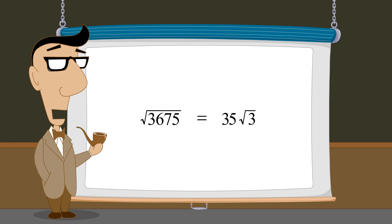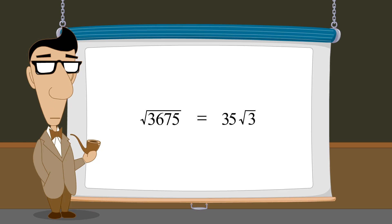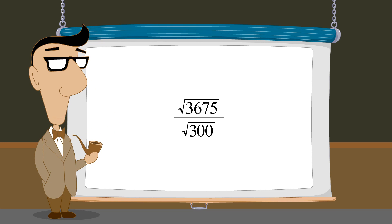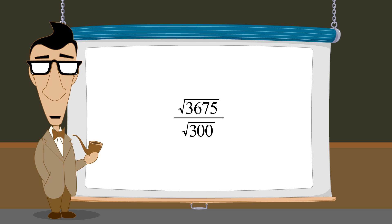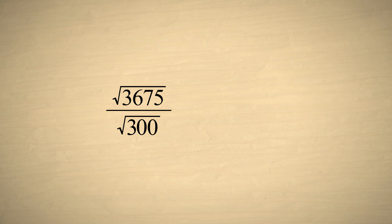35 times the square root of 3 may be easier to work with than the square root of 3675. However, there is another advantage to writing a radical expression in this form. Let's say that we wanted to divide this square root by the square root of 300. Now, this quotient does not look very easy to simplify. However, remember that the top number is 35 times the square root of 3, and as we saw in the previous example, the square root of 300 is 10 times the square root of 3.